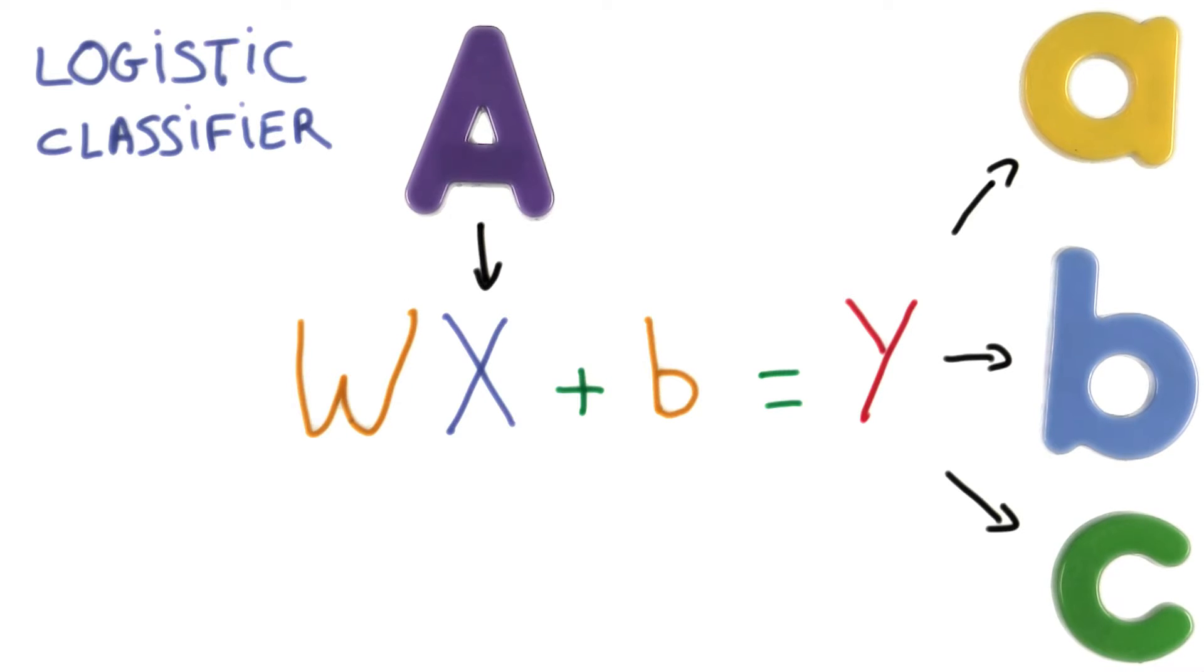So, let's get started training a logistic classifier. A logistic classifier is what's called a linear classifier. It takes the input, for example, the pixels in an image, and applies a linear function to them to generate its predictions.